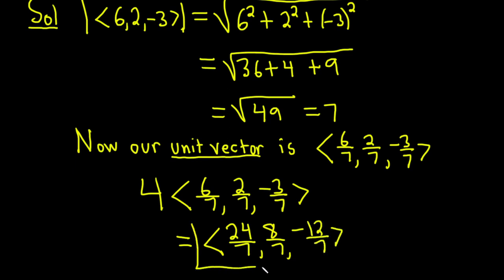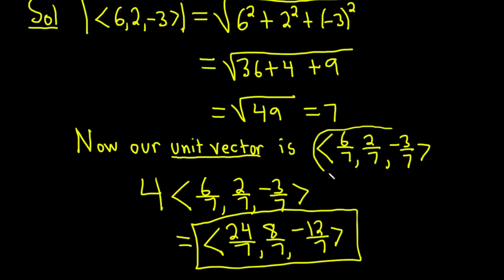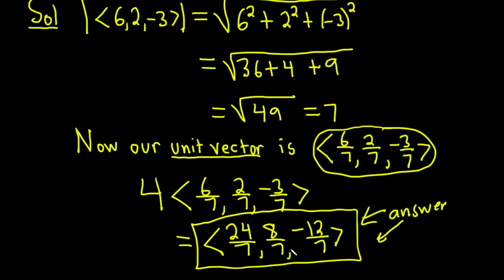This vector should be a vector whose magnitude — whose length — is 4. We could check by computing the magnitude of this vector. You could also verify the unit vector by computing its magnitude and confirming you get 1. But everything should be okay. Hopefully this video has been helpful, and this is our final answer.